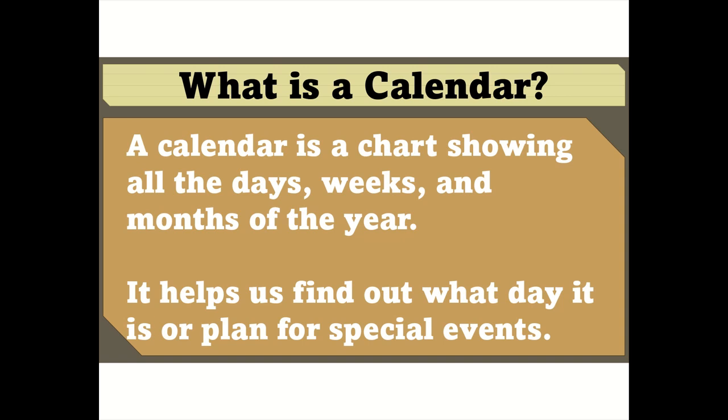What is a calendar? A calendar is a chart showing all the days, weeks, and months of the year. It helps us find out what day it is or plan for special events.